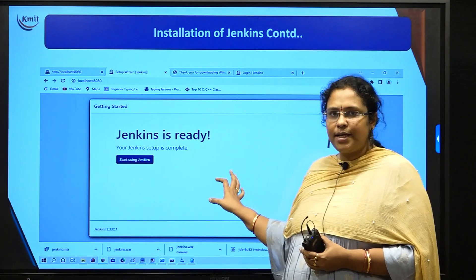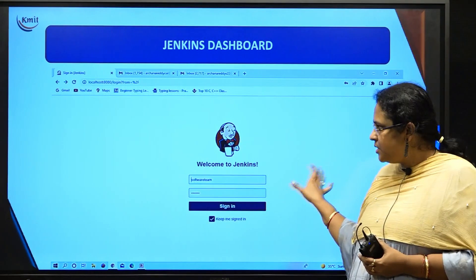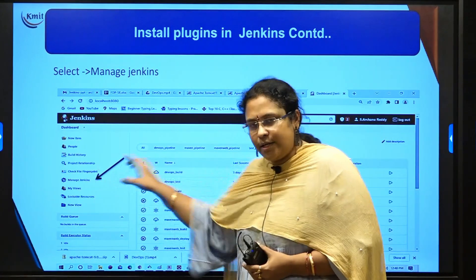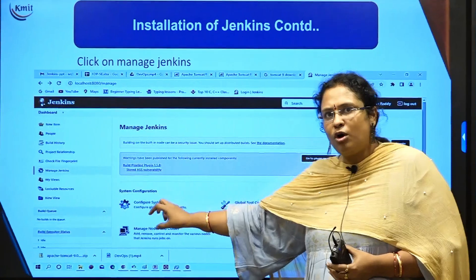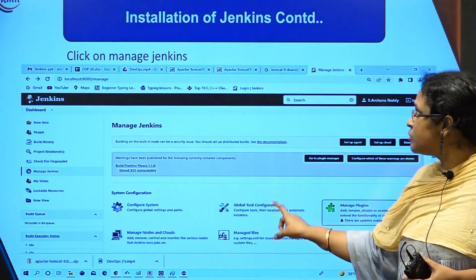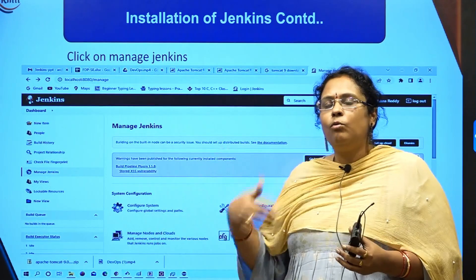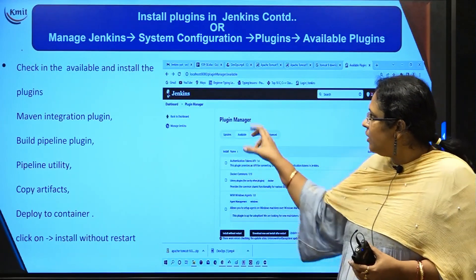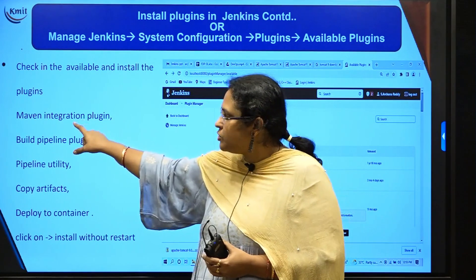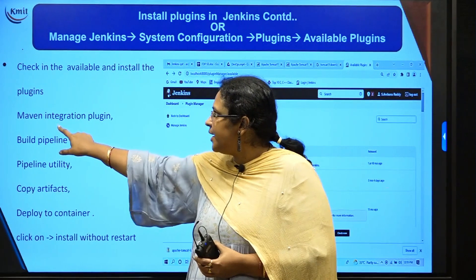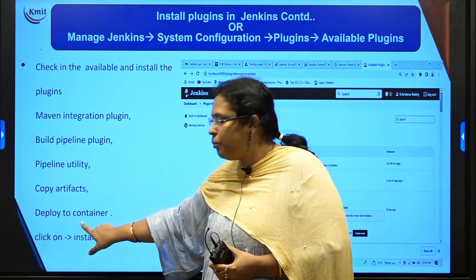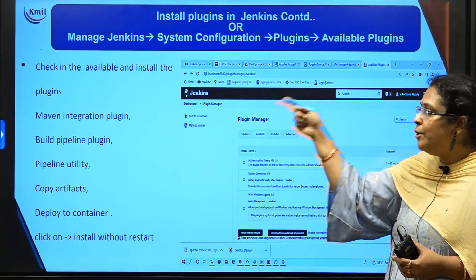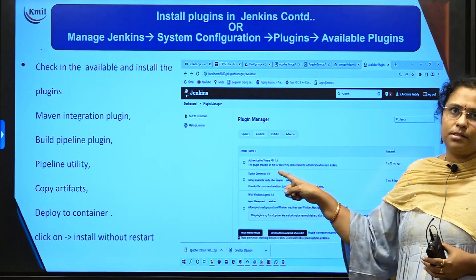Once installation is completed, Jenkins is ready. Log in with your new username and password. From the dashboard, click on Manage Jenkins. Inside Manage Jenkins, you will find Configuration System and Global Tool Configuration. You must manually install these five plugins: Maven Integration plugin, Build Pipeline, Pipeline Utility, Copy Artifacts, and Deploy to Container. Search for each in the plugin search bar and download and install them into Jenkins.